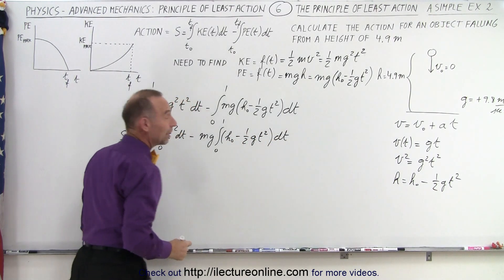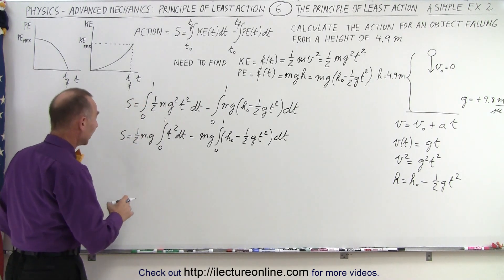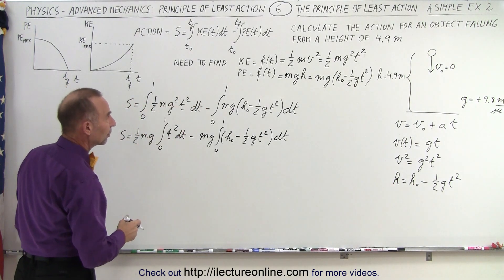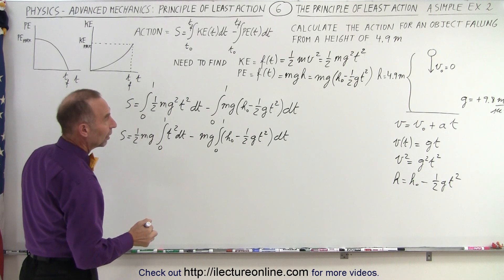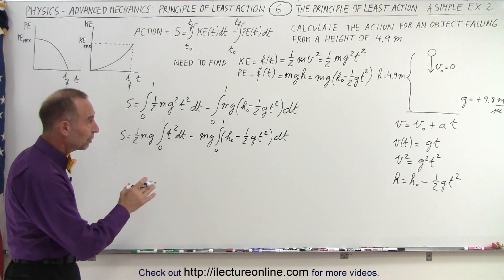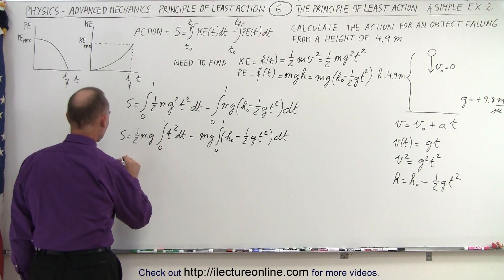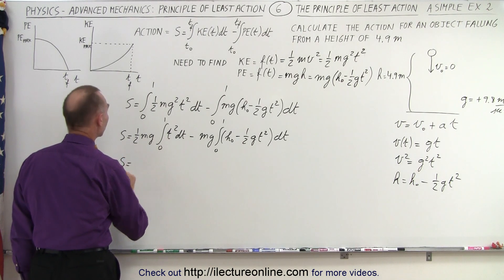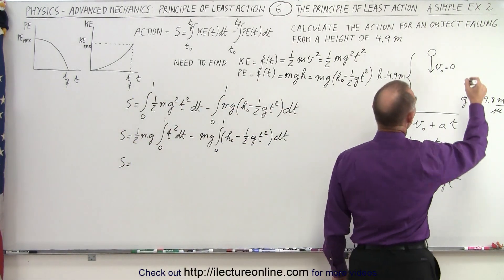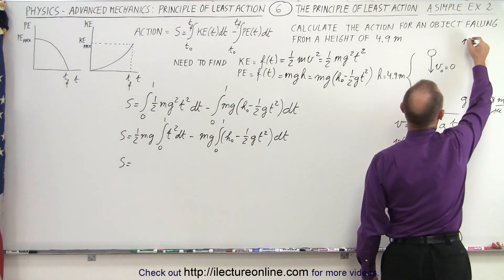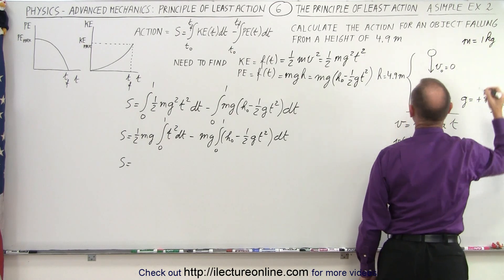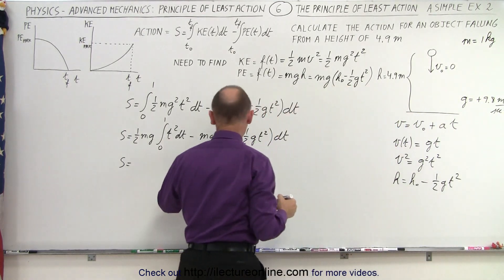Now we're ready to find what that equals — the action for this particular event. The only force acting on the object is gravity. To evaluate numerically, let's say the mass is equal to one kilogram, which makes things a little bit easier. We have g and we have h, so we have everything we need.